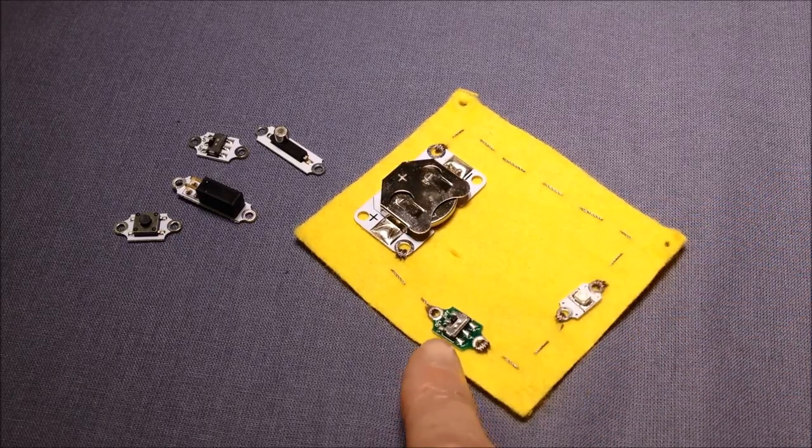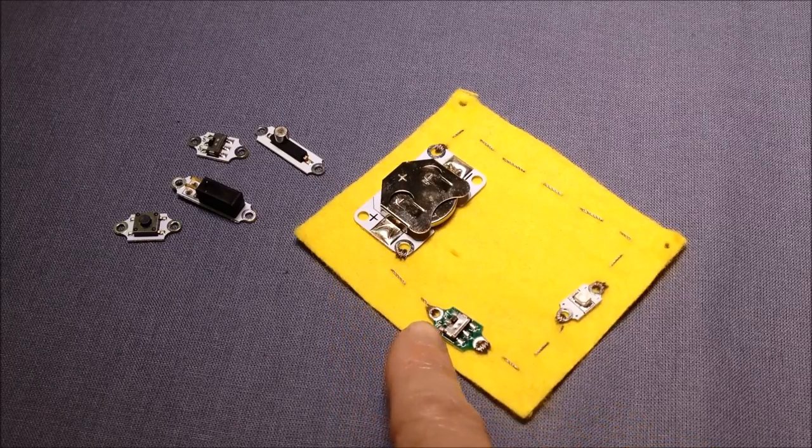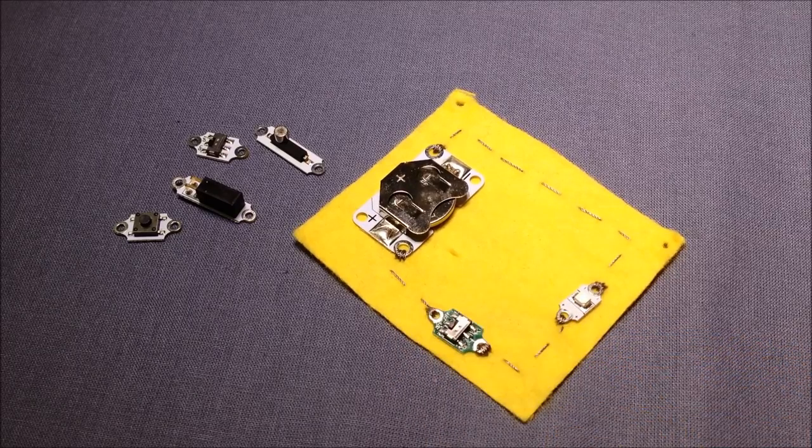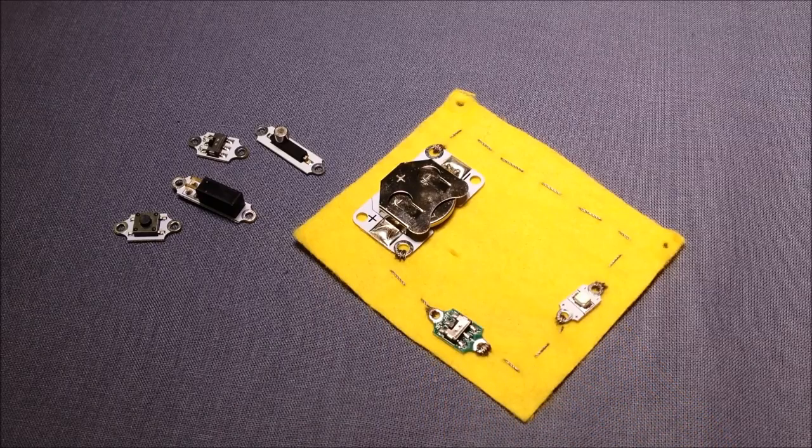Basically what the switch is doing is cutting off the power from the battery to the LED and as soon as we switch that switch across, it allows the connection to join and therefore the LED lights up.